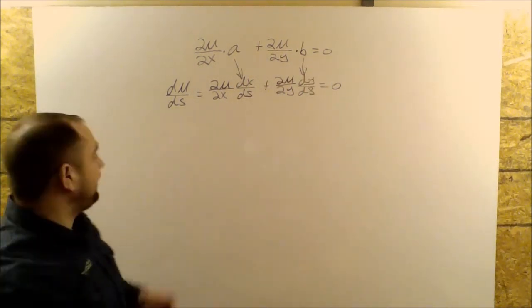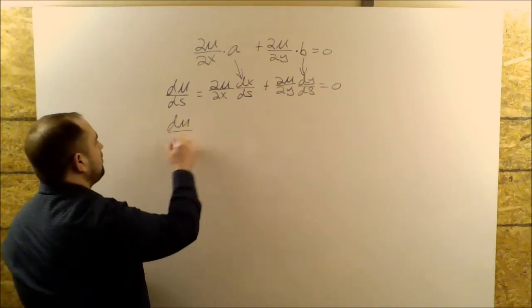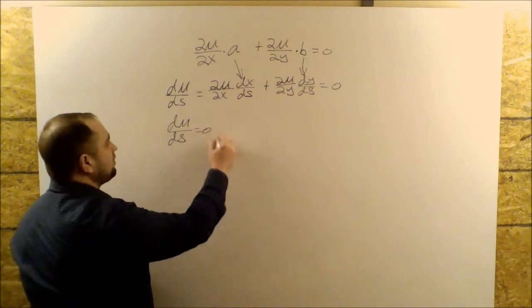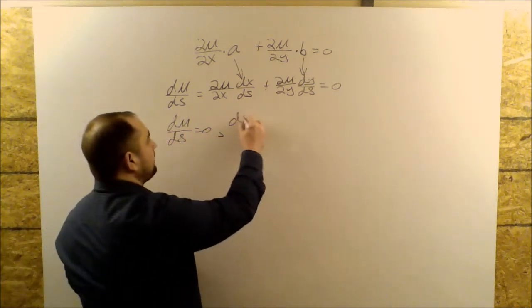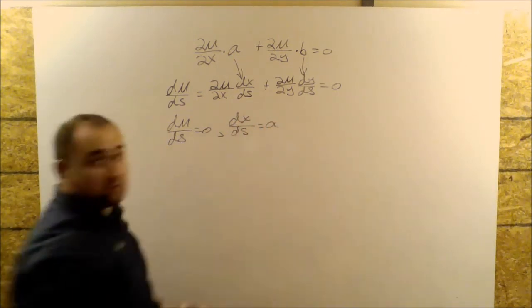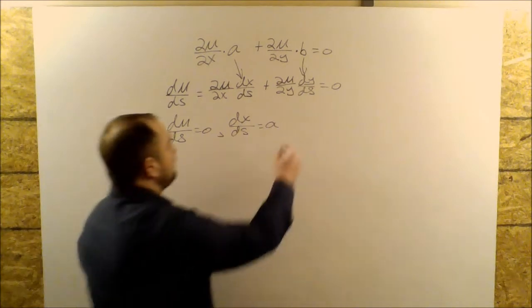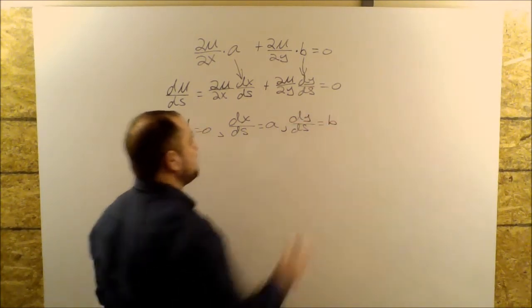So I really have three equations here. I have dU over dS is equal to zero, right here. And then I have dX over dS is equal to A, and then I have dY over dS is equal to B.